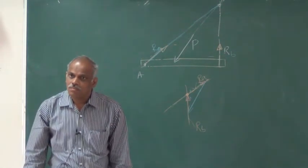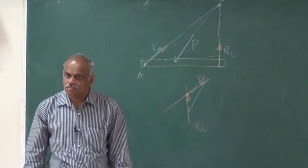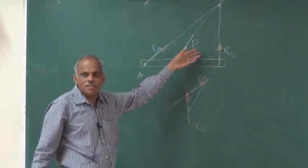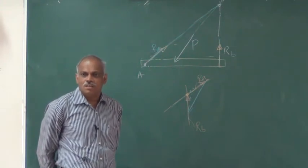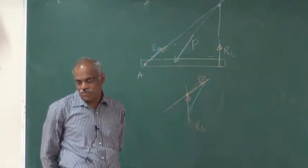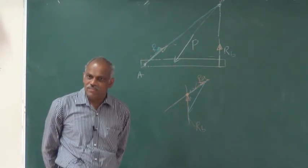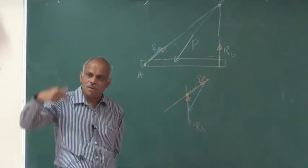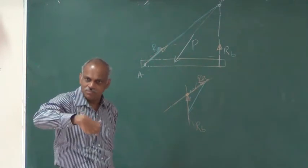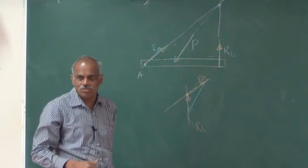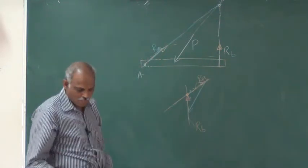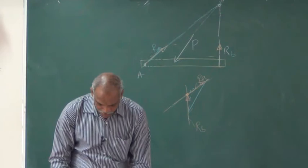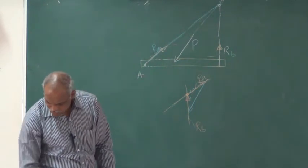A student asks about whether to consider the weight. The weight was not separately considered here — P can be taken as a composition of the weight and an additional applied force. If weight is known and another force is applied, these two can be combined to form a resultant at any angle, and that resultant is treated as P.